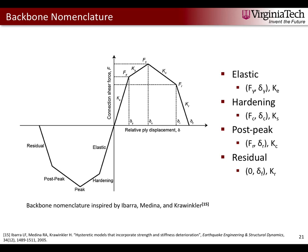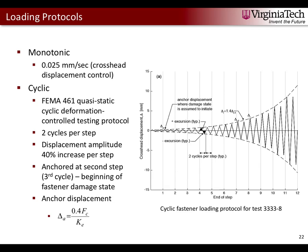We use these backbones to obtain our loading protocols, both displacement-controlled. For monotonic loading we kept a constant rate of 0.025 mm/s. For cyclic loading we adopted the FEMA 461 quasi-static cyclic deformation-controlled testing protocol, which prescribes two cycles of equal displacement per step with a 40% displacement amplitude increase per step. We anchored the displacement at the second step — the beginning of the third cycle — hypothesized to be the beginning of the fastener damage state. The anchor displacement is calculated as the displacement at 40% of peak load in the elastic region from the monotonic backbone.